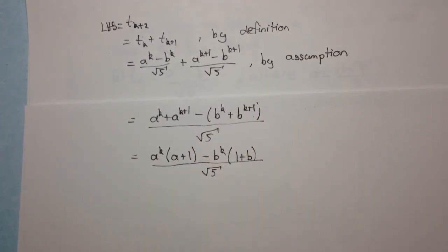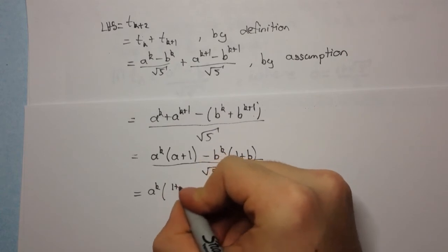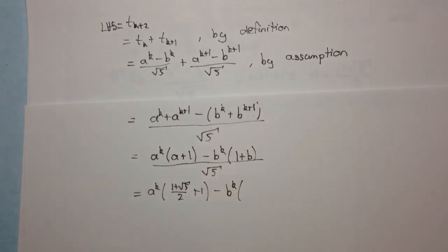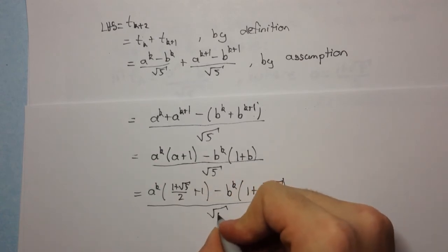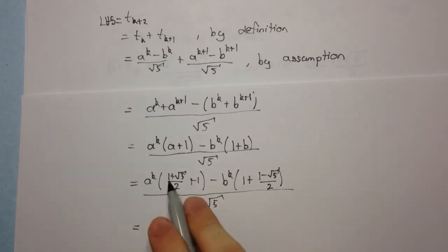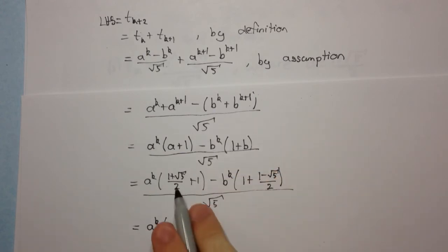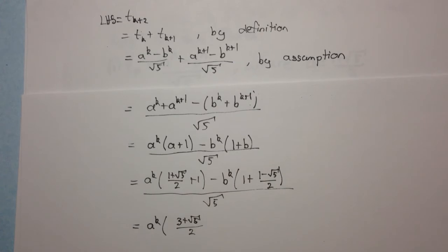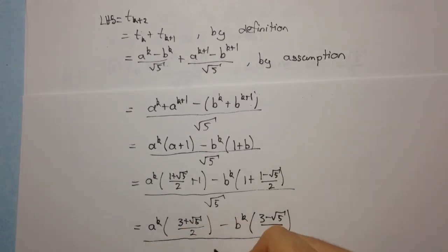Now let's simplify. We get aᵏ times, multiplying by 2 to make a common denominator, so we have (1 plus root 5 plus 2) all over 2, which gives (3 plus root 5) over 2. We can do a similar thing for the b term and we'll get (3 minus root 5) over 2. So the expression becomes: aᵏ times (3 plus root 5)/2 minus bᵏ times (3 minus root 5)/2, over root 5.